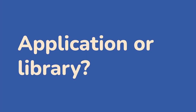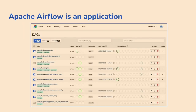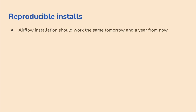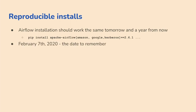Why do we have a problem in the first place? Not only because we have many dependencies, but because of the duality of Airflow — it is both an application and a library. As an application, you want to install it and run the UI, meaning you want to reproducibly install a specific version, like 2.7, with some providers and extensions, and have it work.